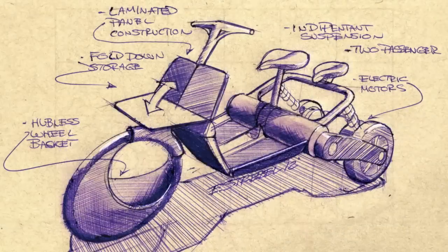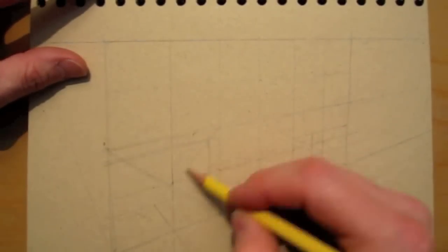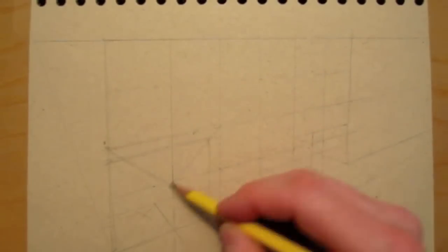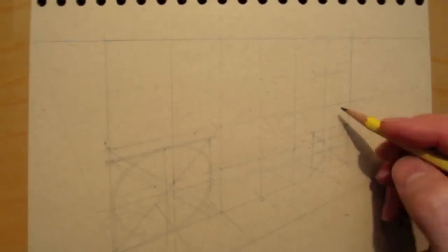First I put a grid on top of my sketch and this is what the final sketch is going to look like. Once I take that grid, I'm going to transfer it onto a 3D grid that I've started to draw here.